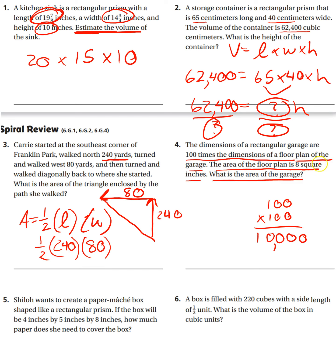10,000 times what? Well, the area of the floor plan was eight square inches, so 10,000 times eight. And that will give you the area of the actual garage.